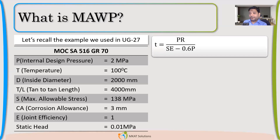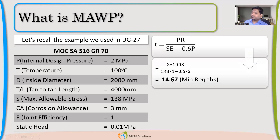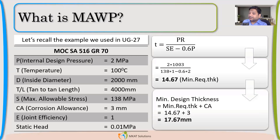Now, how do we do the calculation? First, we calculate the thickness based on pressure. P times R in corroded condition, divided by SE minus 0.6P. We are doing the calculation without static head for now. This gives us the required thickness. Then we add the corrosion allowance to get the minimum design thickness of 17.67 mm.